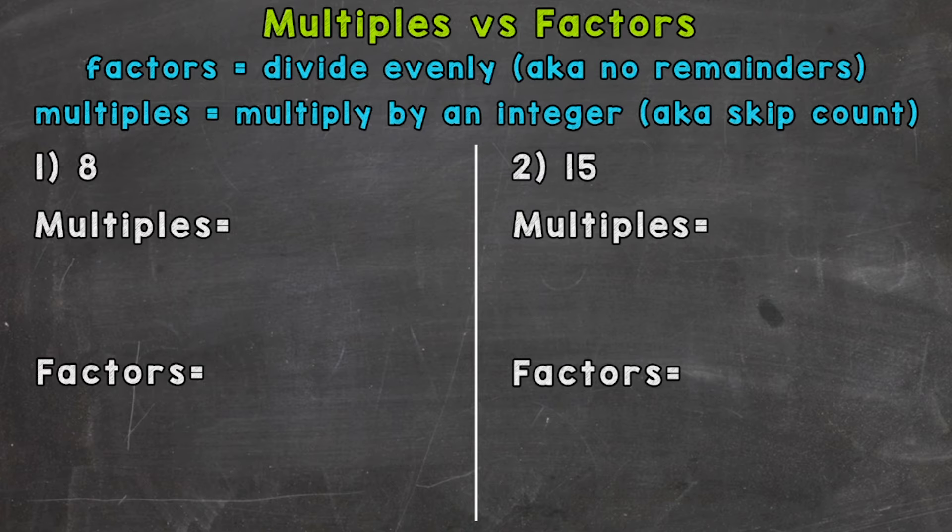So the multiples of eight, we can start with eight. Eight times one equals eight. So we multiplied eight by the integer of one. Now we can multiply by the integer of two. So eight times two is 16. Then three. Eight times three is 24. And you can see how this is turning into just counting by eights or skip counting.